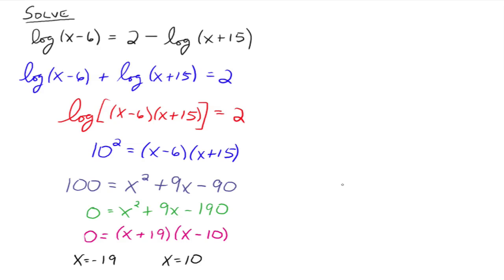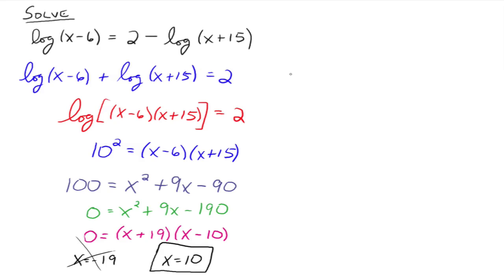Now we have to check that neither solution makes any argument negative or zero. If you take negative 19 and plug it in for x in the first argument, you get negative 25 — that makes the argument negative, so we cannot use negative 19. For x equals 10: plugging into the first argument gives positive 4, and into the second gives positive 25 — both are fine. So 10 is the solution to this logarithmic equation. That extra step of checking that possible solutions don't make any argument negative or zero is essential.